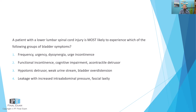Option two: functional incontinence, cognitive impairment, acontractile detrusor. Option three: hypotonic detrusor, weak urine stream, bladder over-distension. Option four: leakage with increased intra-abdominal pressure, fascial laxity. So again, the question is: a patient with a lower lumbar spinal cord injury is most likely to experience which of the following groups of bladder symptoms?